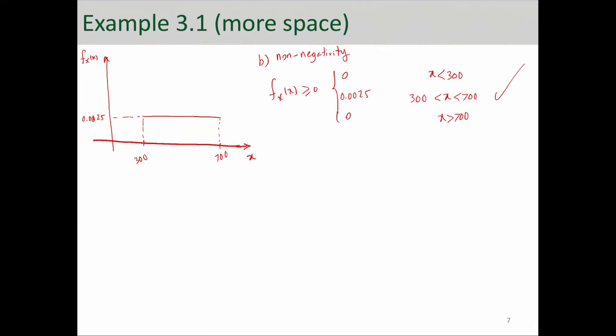The second condition is, has to sum up to 1 over its range. So, let's check that. The range of this random variable is from 300 to 700. So, to check that condition, we have to integrate from 300 to 700 over 0.0025 dx.